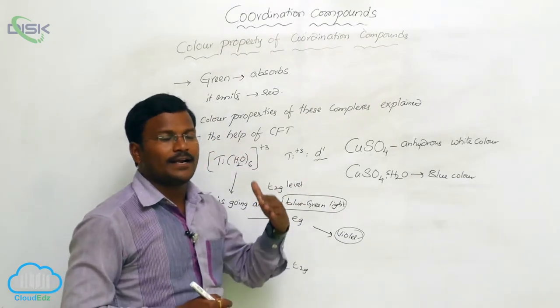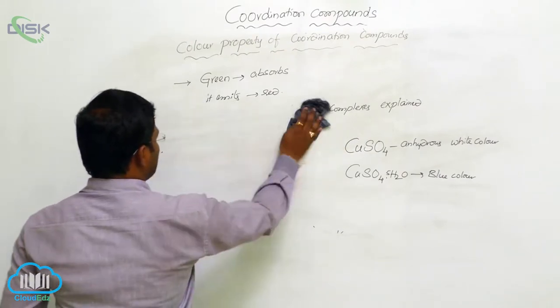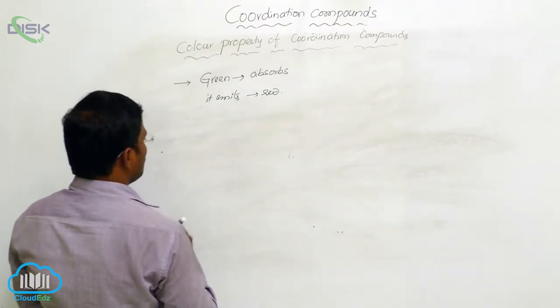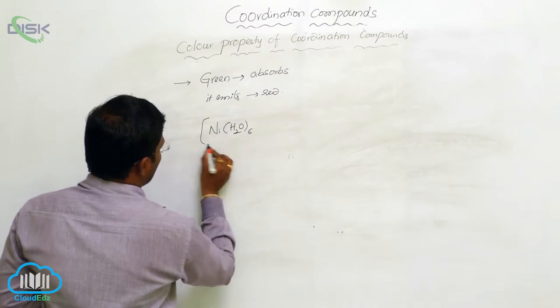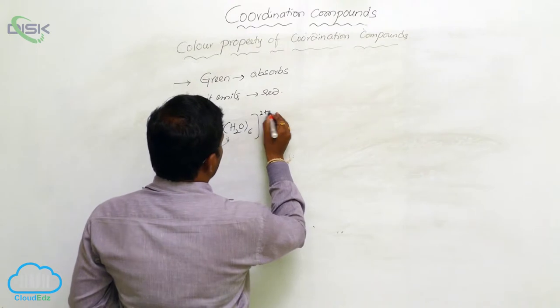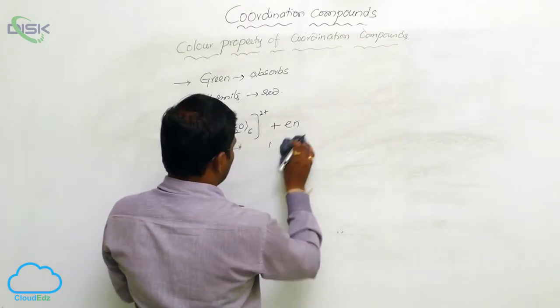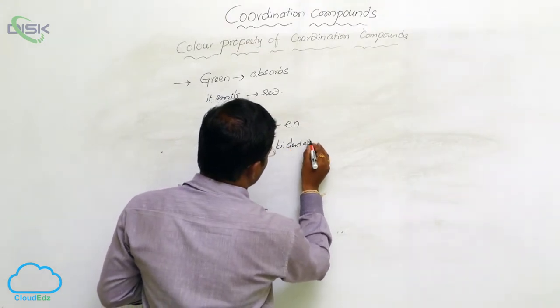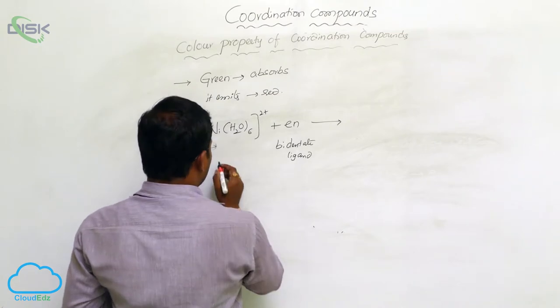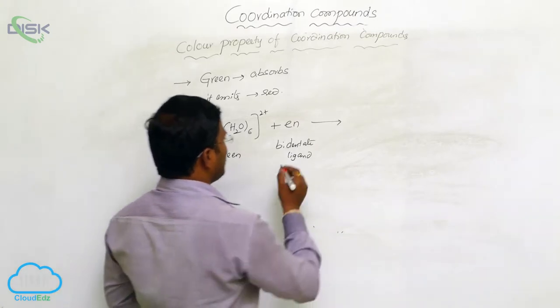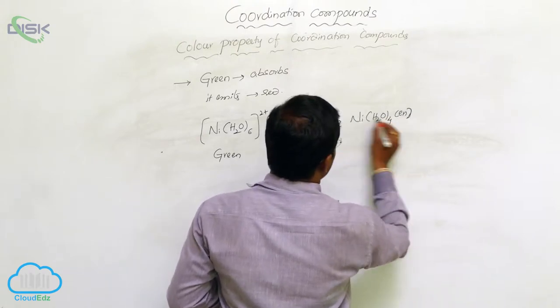Let us illustrate one example. During chemical reactions or ligand exchange processes, the colors of the compounds also change. Like nickel hexa aqua complex, when reacted with ethylenediamine, which is a bidentate ligand, the resulting nickel H2O complex exhibits color changes. Hexa aqua nickel complex exists in green color.